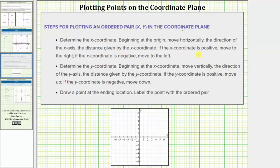If the x coordinate is positive, move to the right. If the x coordinate is negative, move to the left. Next we determine the y coordinate, which is the second value of the ordered pair.